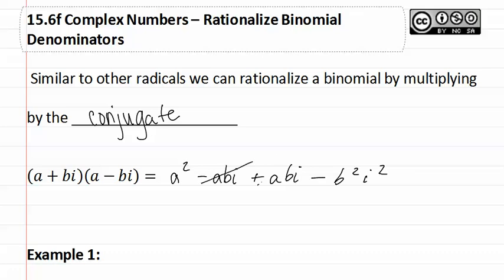The middle two terms drop out, as should always happen when you multiply conjugates. You get a squared minus b squared times negative one, which gives you a squared plus b squared. As you can see, the i dropped out.